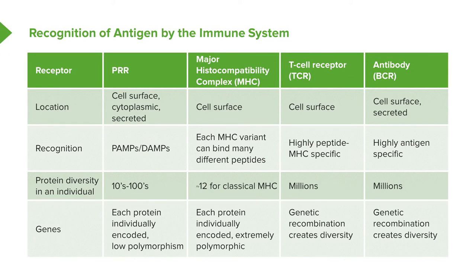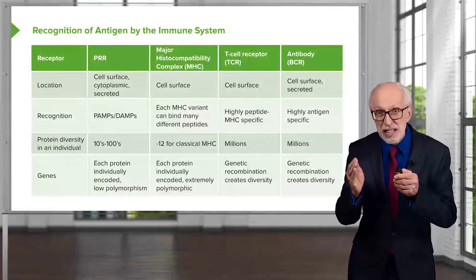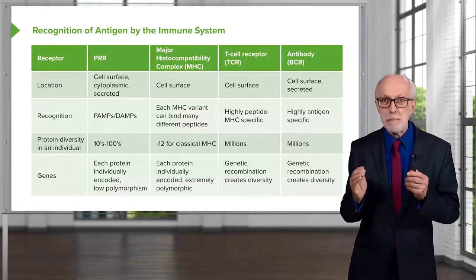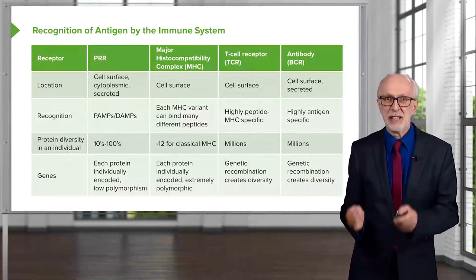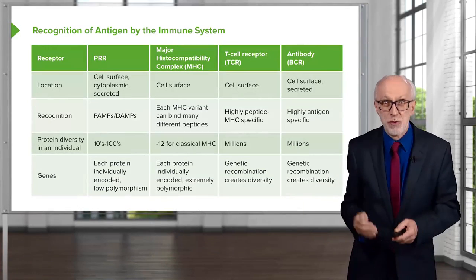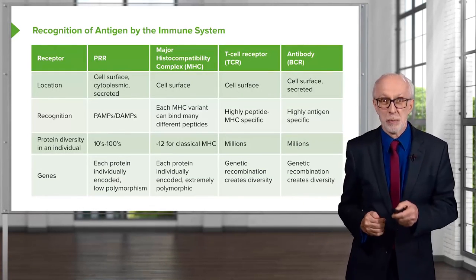We have a bunch of T cell receptor genes and a separate bunch of B cell receptor genes, or antibody genes, and these can recombine by a mechanism that's completely unique — there's nothing else in the body that does anything like this. From a relatively small number of genes, we can make millions and millions of different antigen receptors, and it's one of the things that makes the adaptive immune response quite so remarkable.